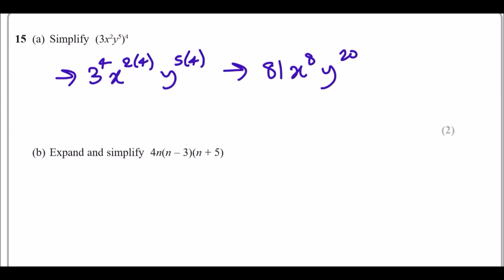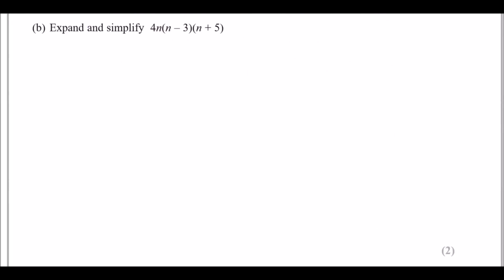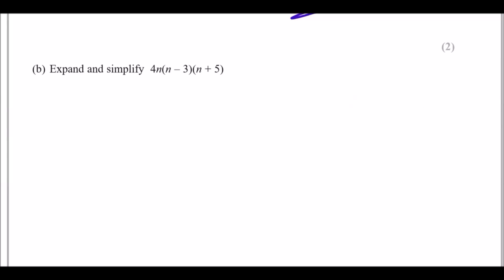And y is just 5 times 4 which is 20 — that's 15a done. Now for 15b: expand and simplify 4n(n-3)(n+5). With these kinds of questions, every time you've got brackets you work with the brackets first and leave everything else. So right now let's just ignore the 4n and expand the double bracket: do n times n, n times 5, then minus 3 times n, and minus 3 times 5.